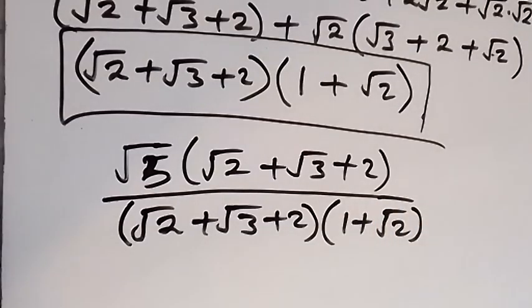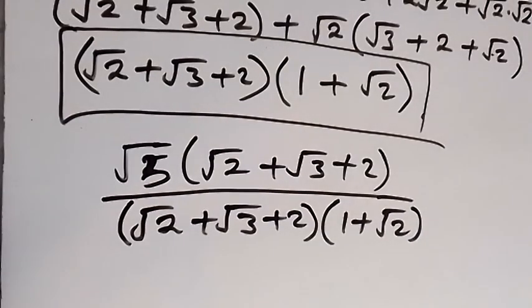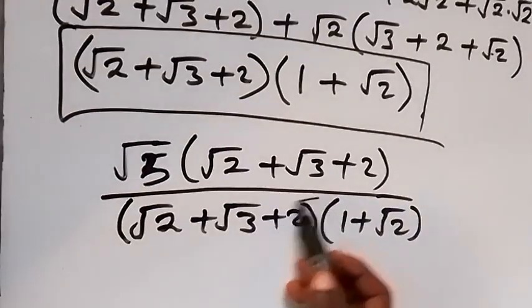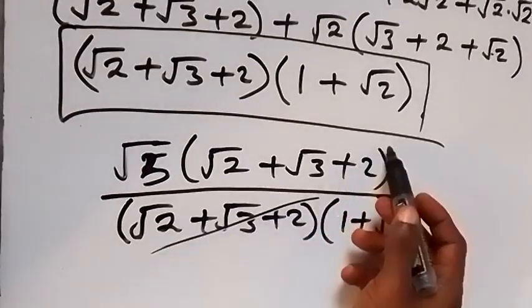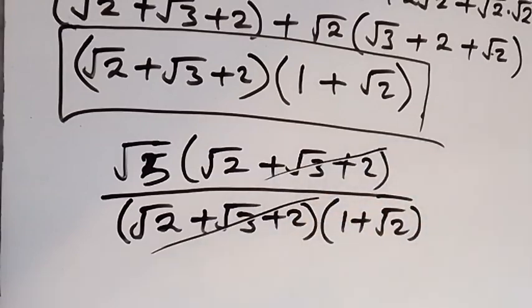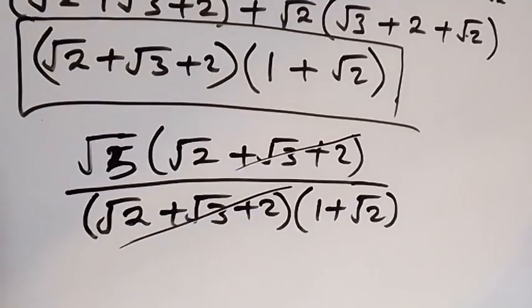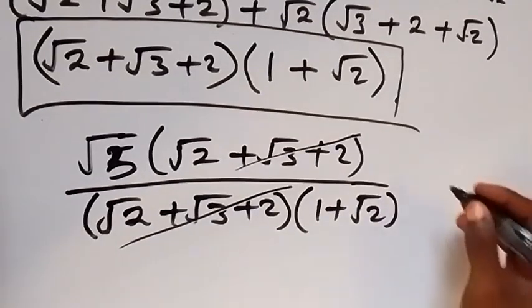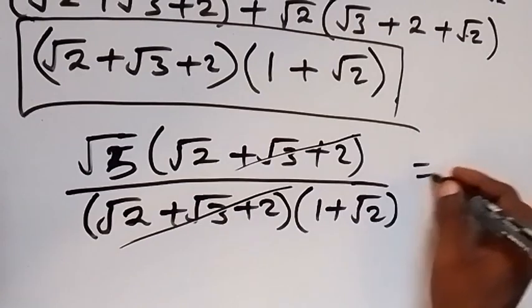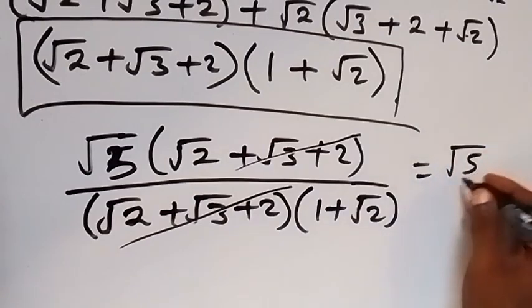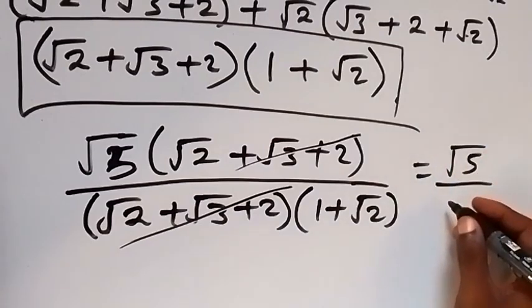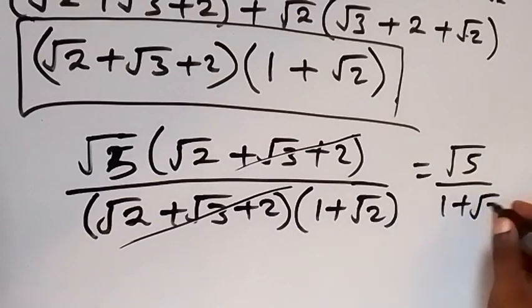The common factor bracket root 2 plus root 3 plus 2 cancels from numerator and denominator. This reduces to root 5 divided by 1 plus root 2.